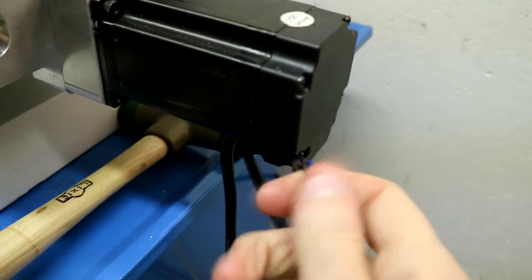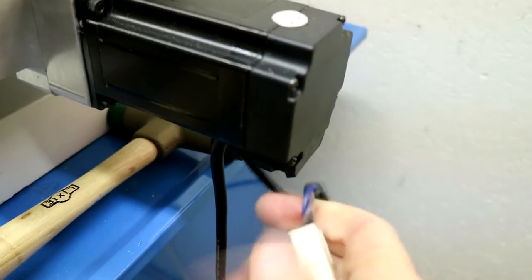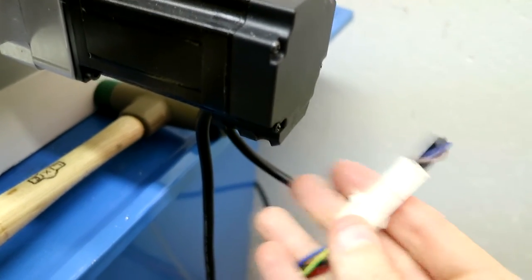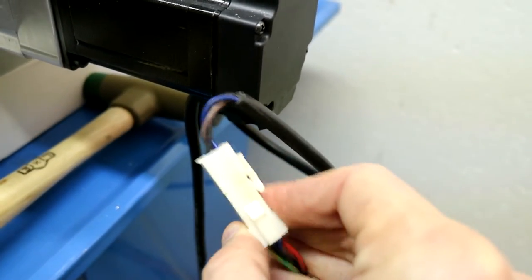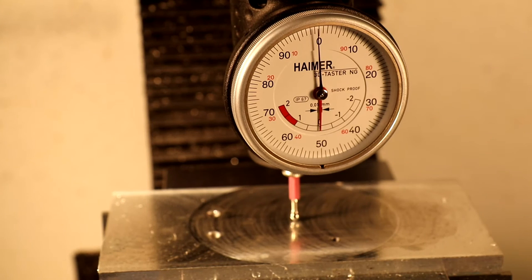Occasionally, the x-axis would fault for no apparent reason. This was a rare event and hard to associate with the cause. One day while touching off a part, the x-axis faulted, causing an emergency stop.